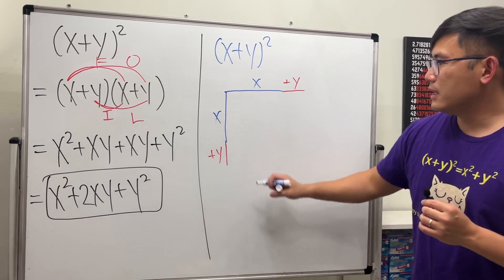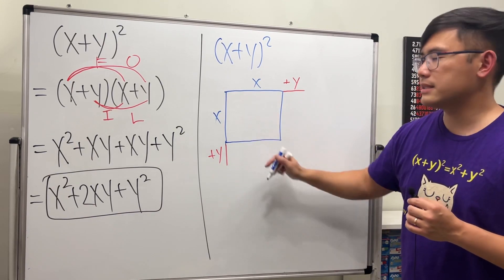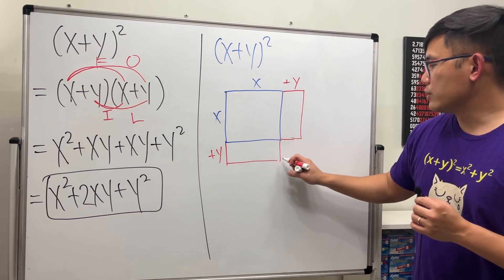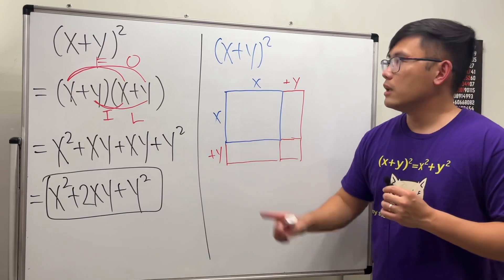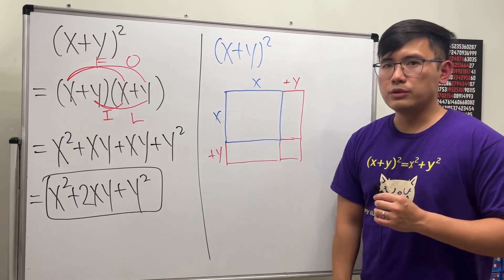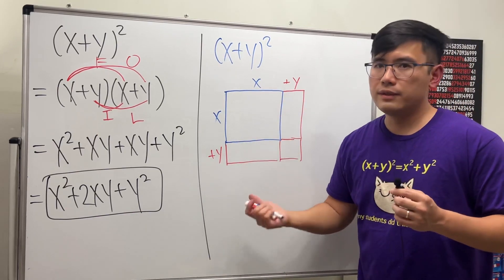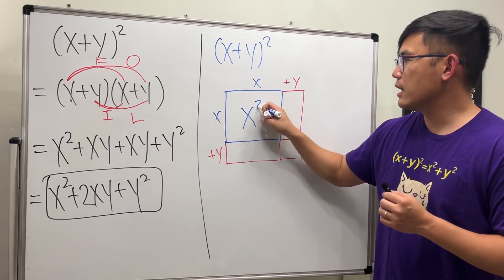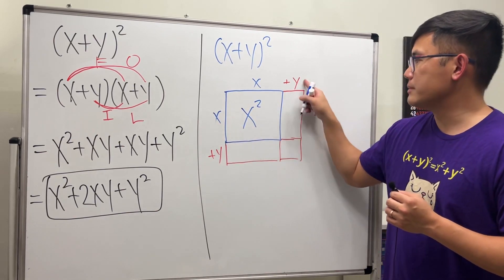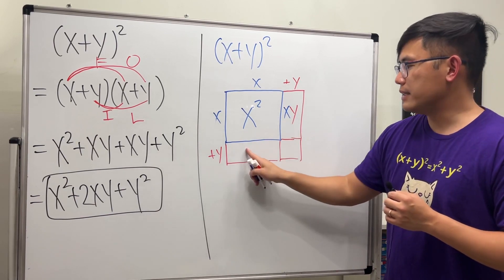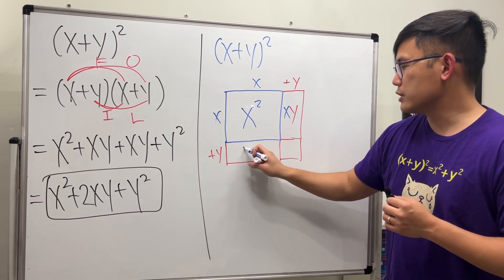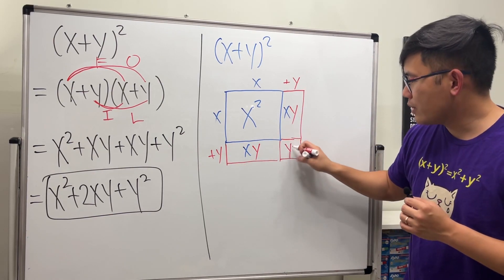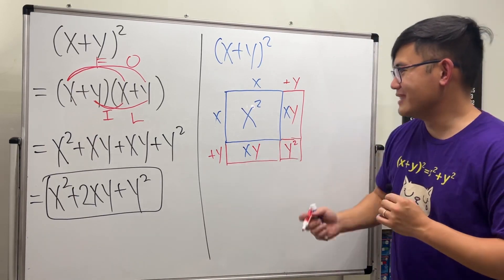Now we draw boxes. We have a blue box, two rectangles, and then we complete the square. (x + y) to the second power means we're finding the area of a square. The top-left box is x times x, which is x squared. The rectangle next to it is x times y, so that's xy. The rectangle below is also x times y, so xy again. And lastly, y times y is y squared.